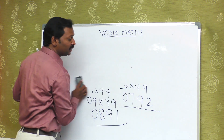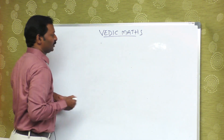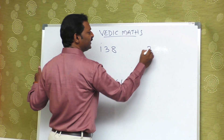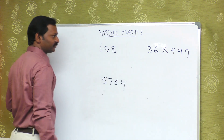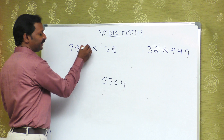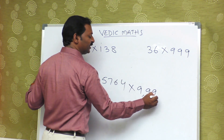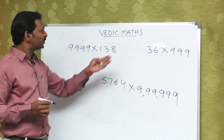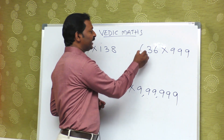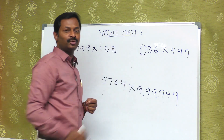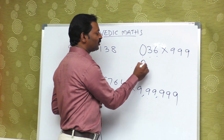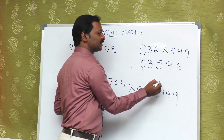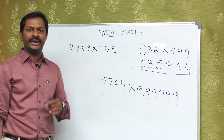What about if I give a bigger number? For example: 138 or 5764 or 36 multiplied by 999, or multiplied by 9999, or by 9,99,999. We need to match equal numbers of digits. 99 is equal to 2 digits. We assume a leading 0, so 1, 2, 3 digits match. What is 1 less than the given number? 0, 3, 5 — that is the first part of the answer. The combination of 0 is 9, combination of 3 is 6, combination of 5 is 4. This is very simple — you can do it in just 3 to 5 seconds.